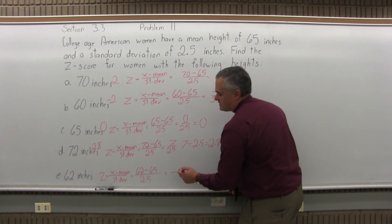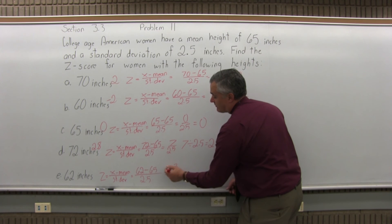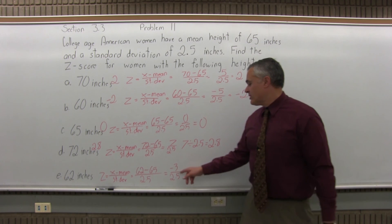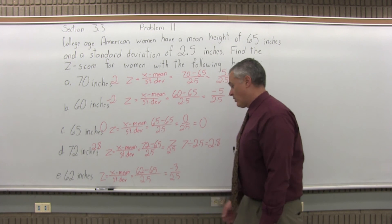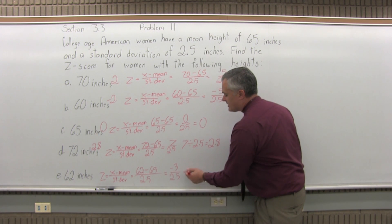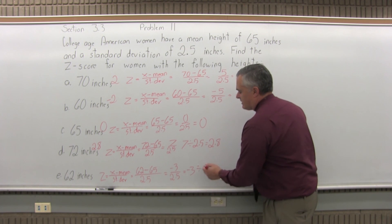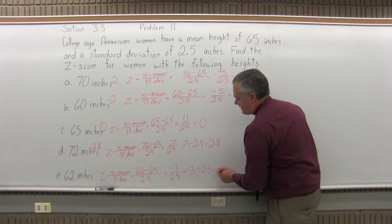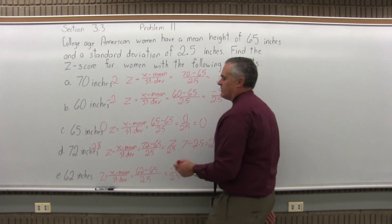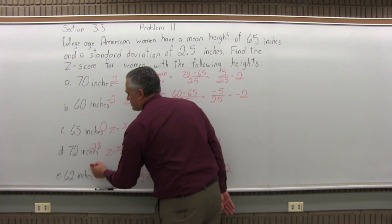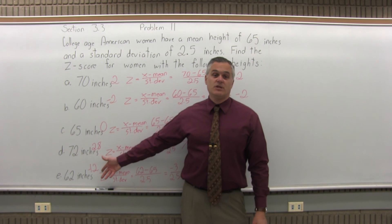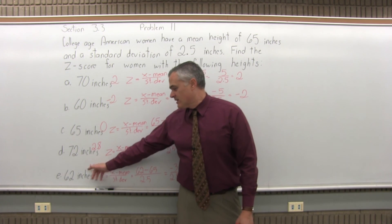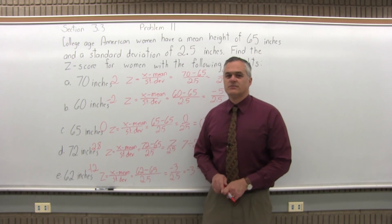Now, in the numerator, 62 minus 65 is negative 3. Don't forget the negative. It makes a big difference. Again, 3 over 2.5 doesn't reduce that nicely. If it was negative 2.5 over 2.5, that would reduce to 1 or negative 1. But this is something else you might want to do with a calculator. Negative 3 divided by 2.5 will come out to negative 1.2. So a woman who is 62 inches tall will have a z-score for a height of negative 1.2. That means she has 1.2 standard deviations shorter than the average height. The negative being less than the average.